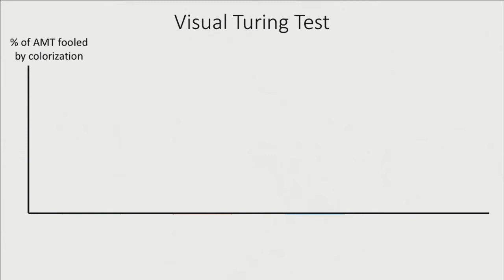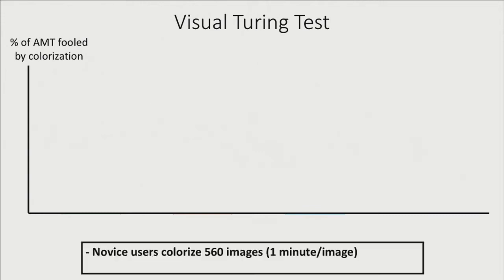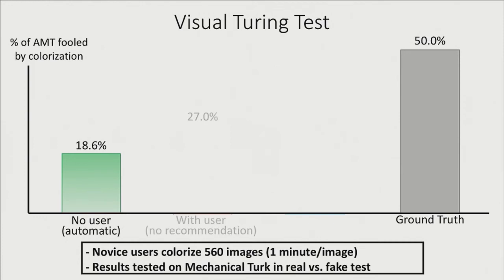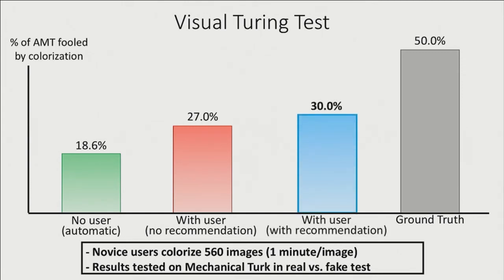To evaluate our recommendation system and interface, we ran a user study with novice users given minimal training. Users were asked to create realistic colorizations given one minute per image. We then showed the results to Mechanical Turk workers alongside ground-truth images and asked which was real. A perfect colorization algorithm should produce a 50% fooling rate. Our method without user points fools the turkers 90% of the time. With just one minute of use with our interface, results fool turkers 27% of the time without the recommendation system, and 30% of the time with it, indicating the recommendation system helps produce better results.